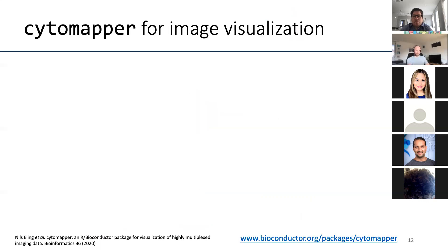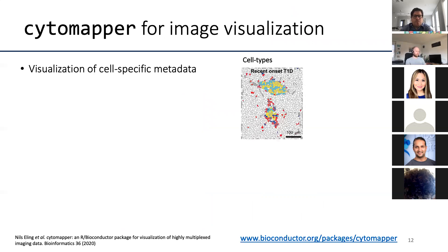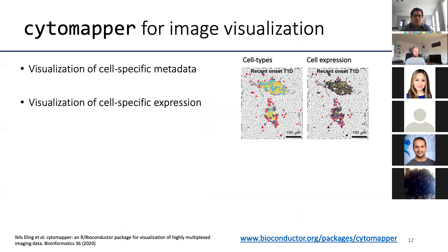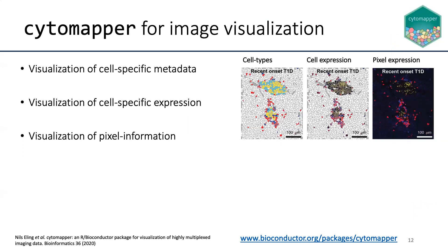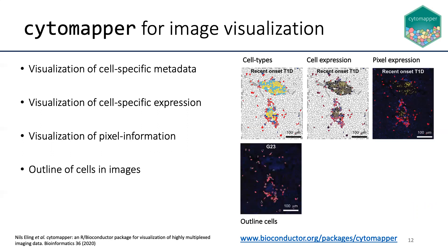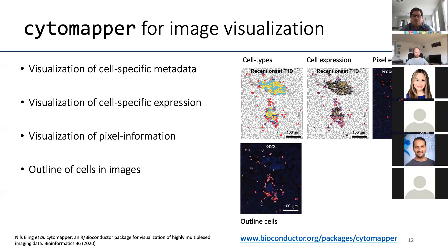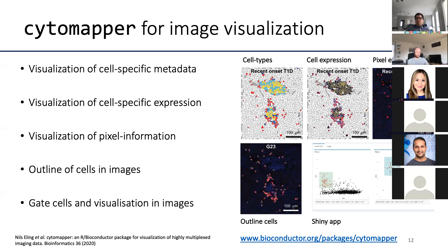I'll first talk about CytoMapper for image visualization directly in R. It allows the user to visualize cell-specific metadata on segmentation masks — you can see individual cells colored by cell type. You can also visualize mean cell intensity or other expression features on segmentation masks, directly visualize pixel information as a pseudo-color composite image, and outline cells on images, which is quite nice for checking segmentation quality control.